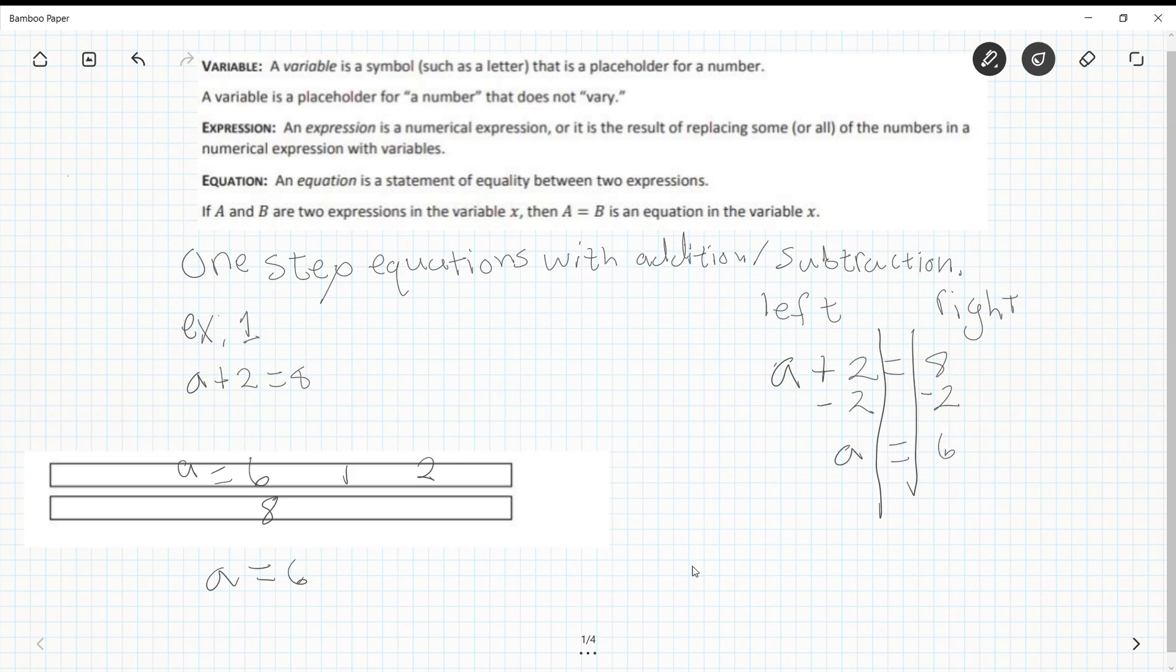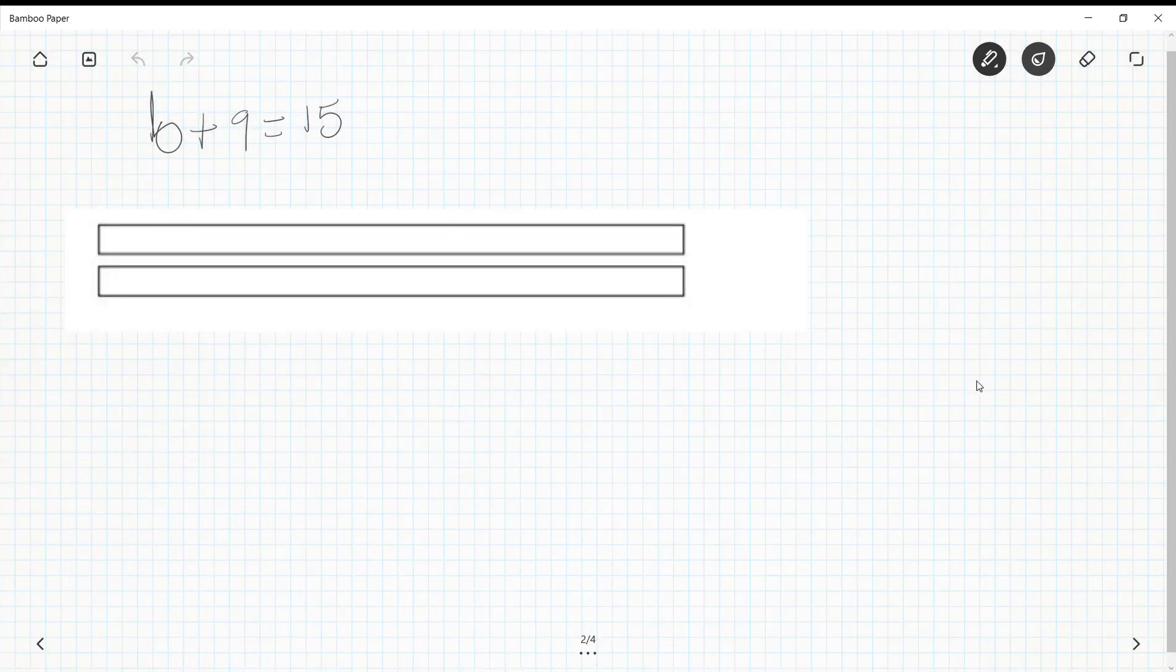So we got the same answer, just slightly different ways. So let's try that with another example. b plus 9 equals 15. Same thing, I'm gonna take one of these boxes, I'm gonna put 15 in it, and I'm gonna take b and 9. b plus 9 equals 15, so what plus 9 equals 15? Again, we get that b equals 6. 6 plus 9 is 15. b equals 6. Please